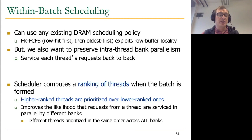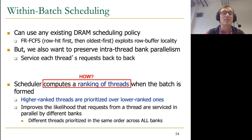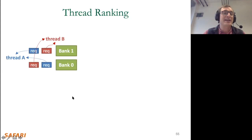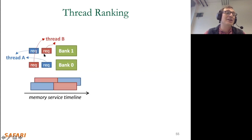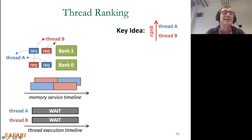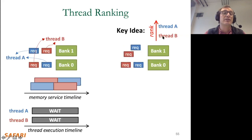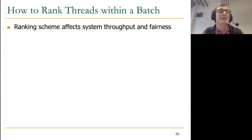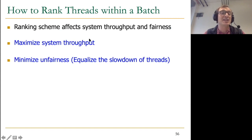To preserve intra-thread bank parallelism, we compute a ranking of threads when a batch is formed. Higher-ranked threads are prioritized over lower-ranked ones. This improves the likelihood that a thread's requests are serviced in parallel by different banks, because all banks prioritize threads in the same rank order. The ranking scheme affects both throughput and fairness. Ideally, we want to maximize system throughput and minimize unfairness — equalize the slowdown of threads. Maximizing system throughput comes from minimizing the average stall time of threads within a batch. And minimizing unfairness is helped by minimizing average stall time as well.